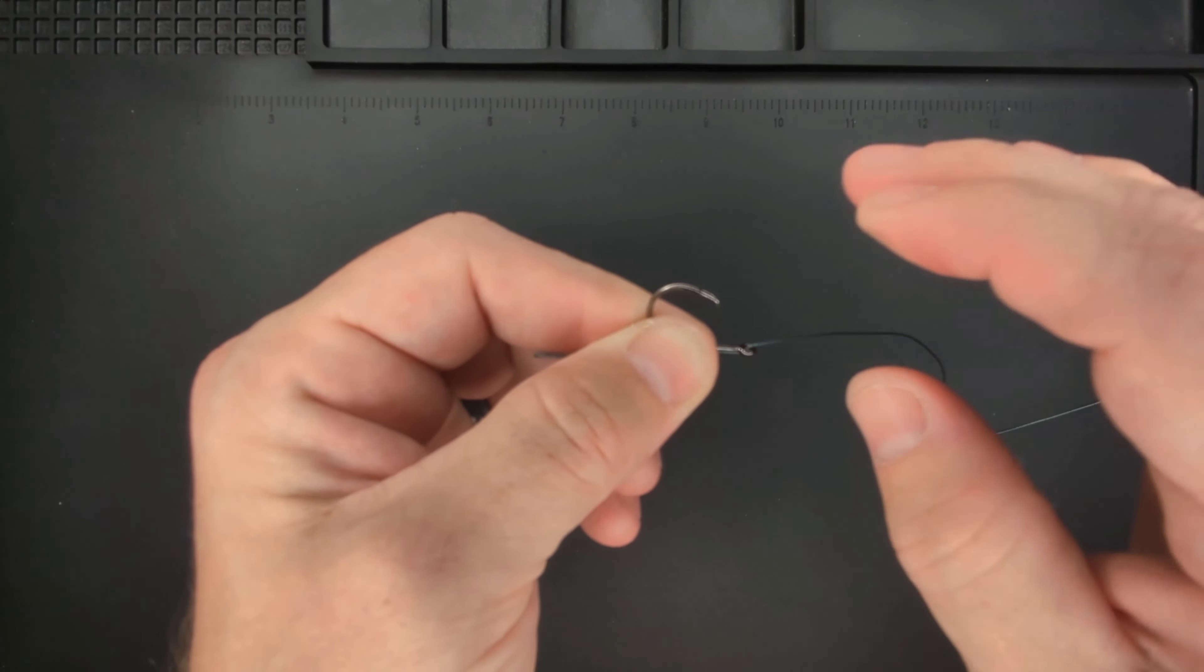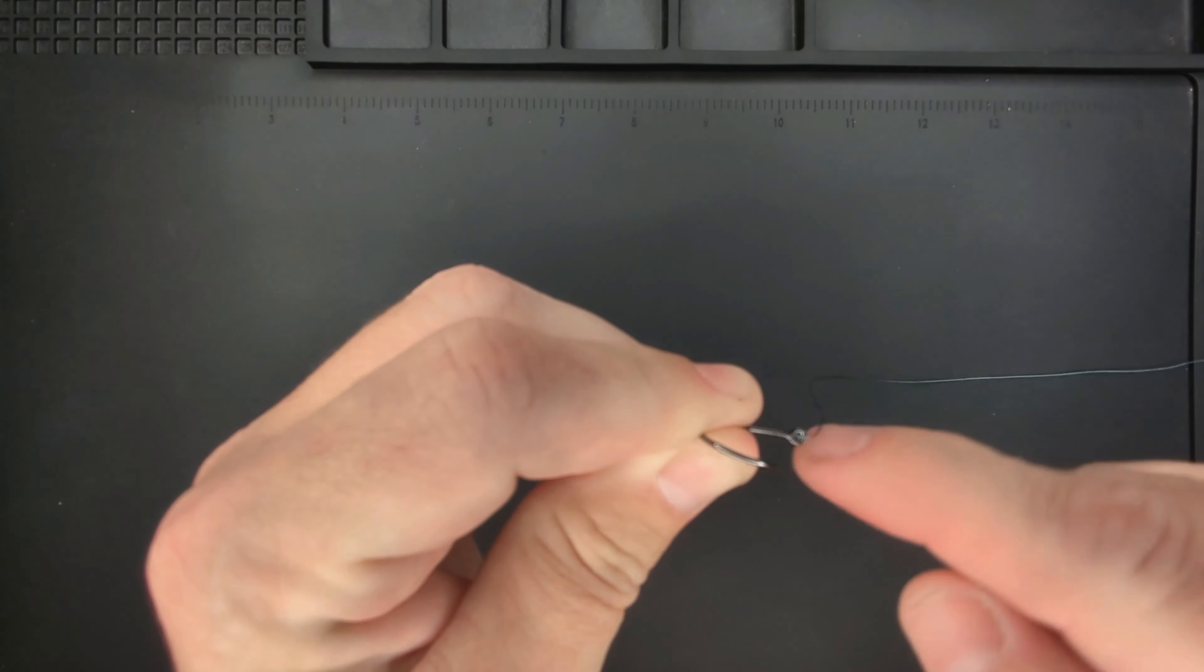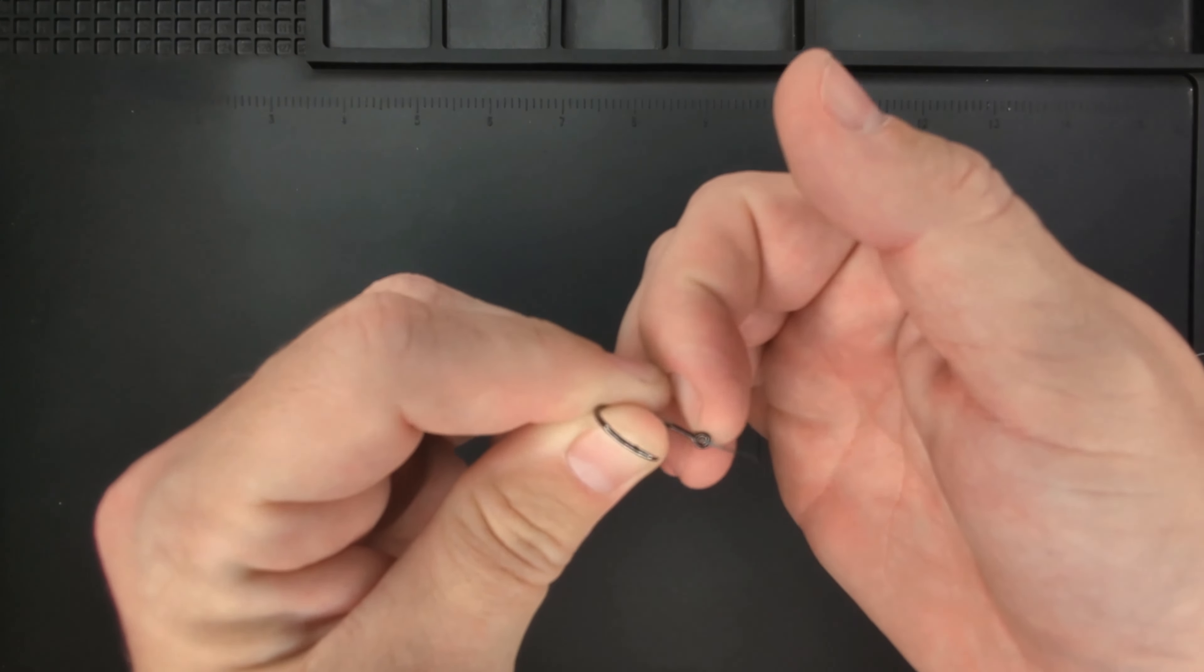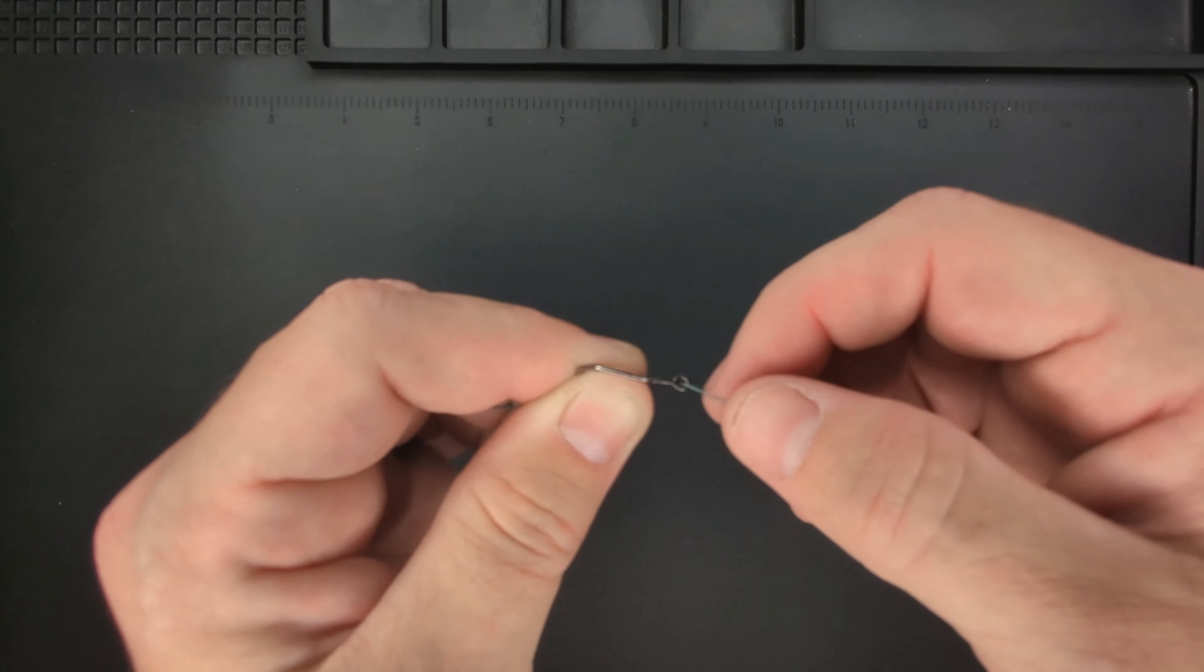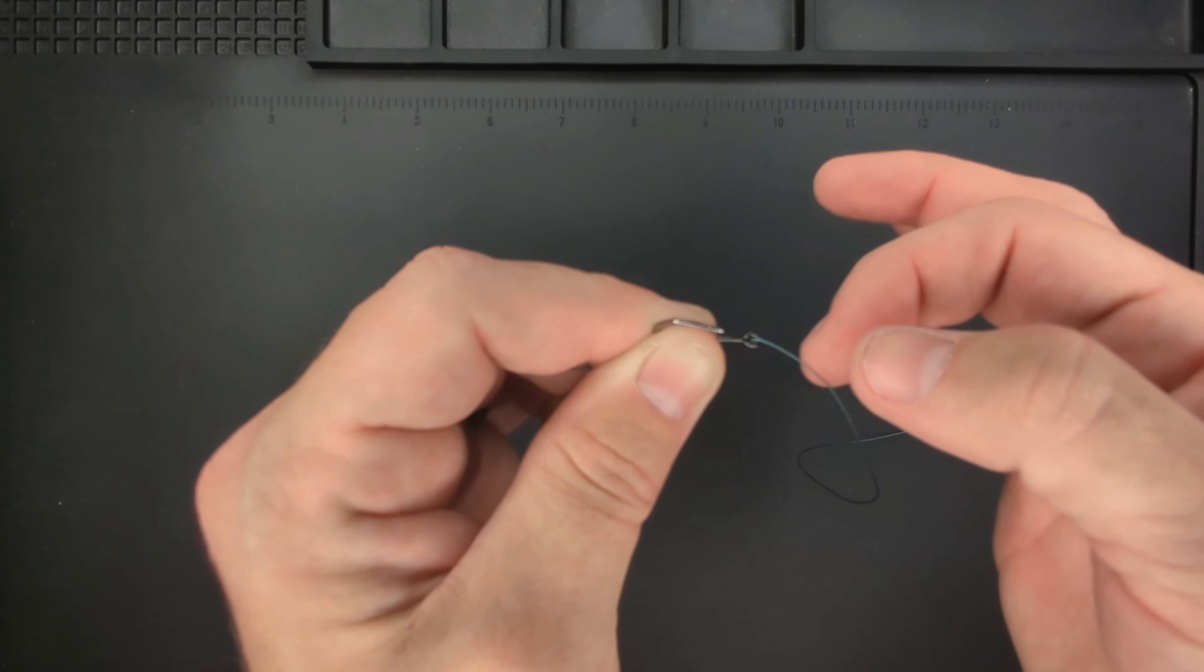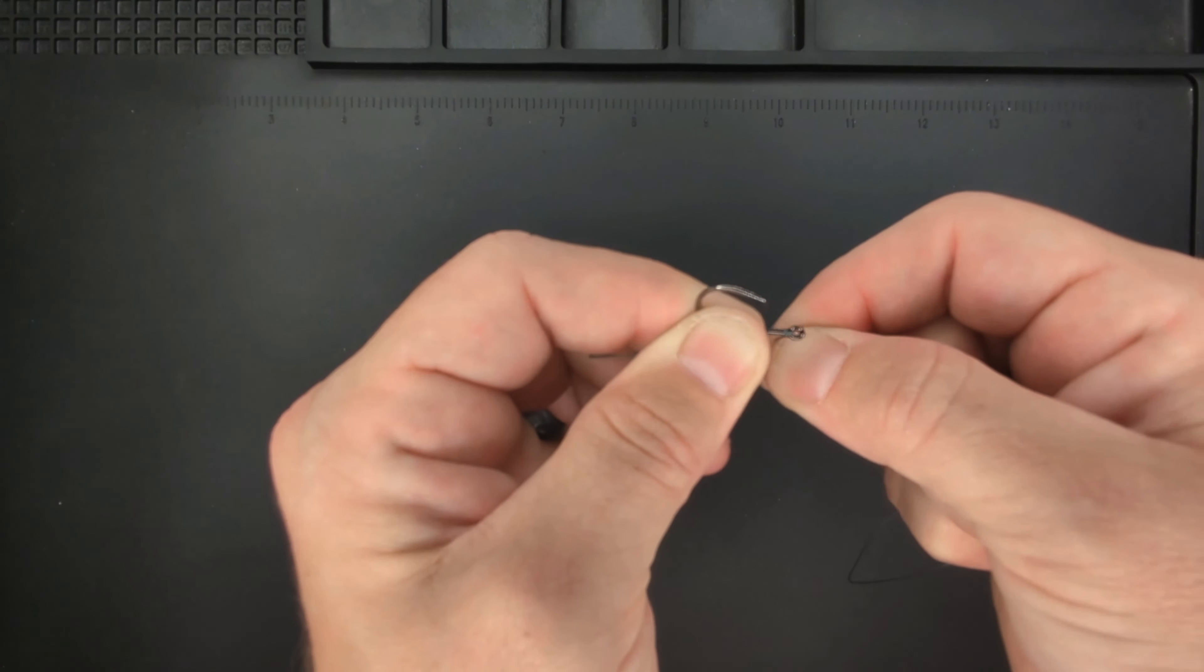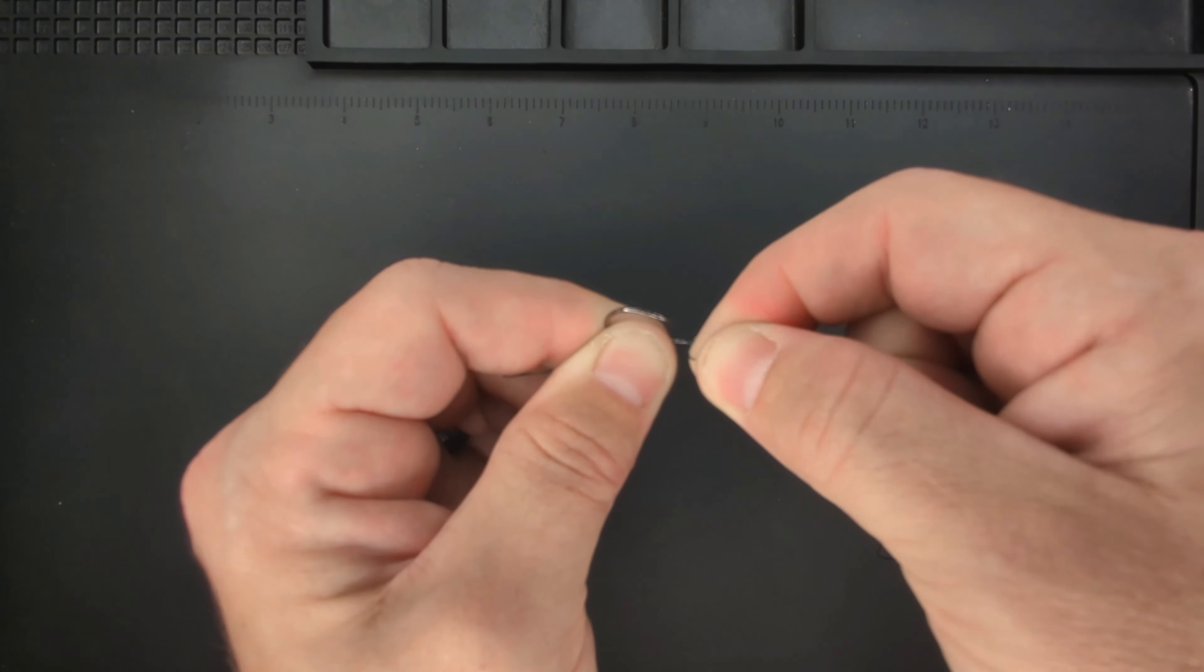Now take the line and look at the eye on the hook. The open side you want to avoid because that can chafe your line, but take your line and start wrapping it on the opposite side. Wrap it five to six times around the shank of the hook.